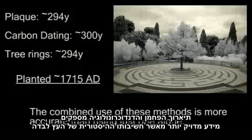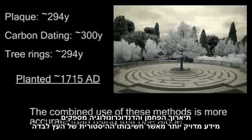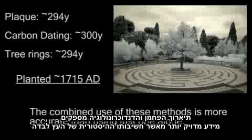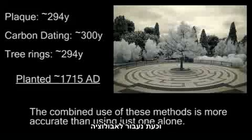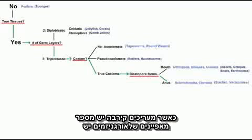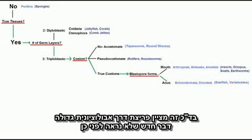The carbon dating and dendrochronology provide a higher probability of accuracy than the tree's historical significance alone. Now let's move on to evolution. When assessing relatedness, there are certain diagnostic characteristics that organisms have. For the most part, these represent a major evolutionary breakthrough — a new feature that's never been seen before.